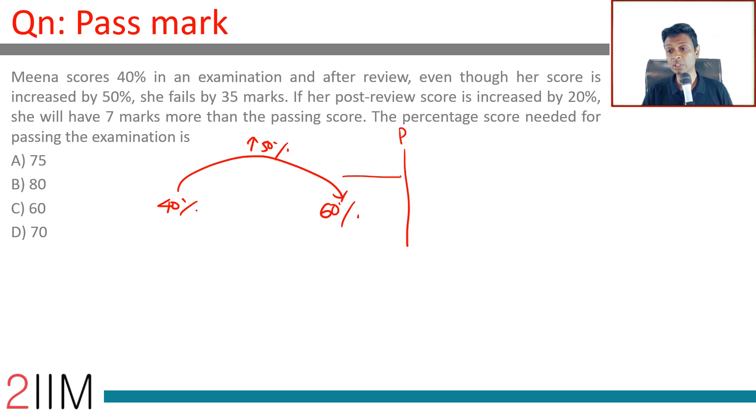She fails by 35. If her post-review score is increased by 20 percent, she will have seven marks more than the passing score. The score is jacked up here by 20 percent.